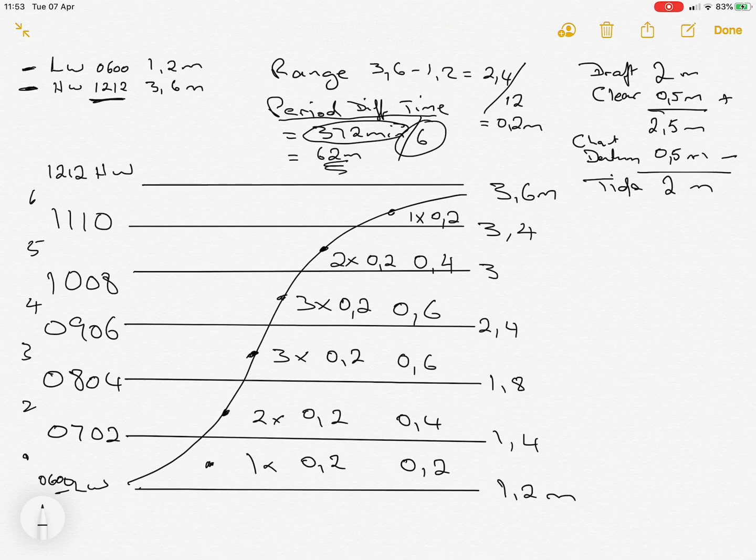So if you look at 0600, 0702, 0804, 0906, 1008, 1110, and 1212—those are our time periods.